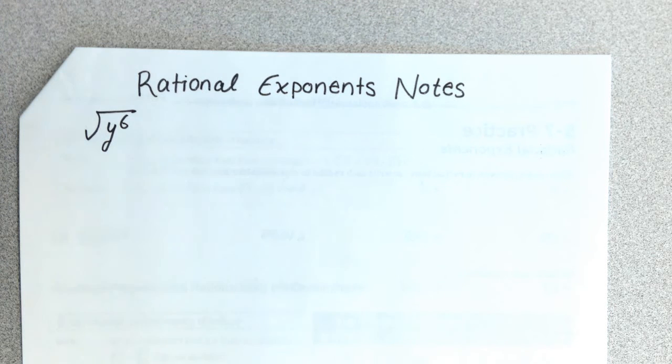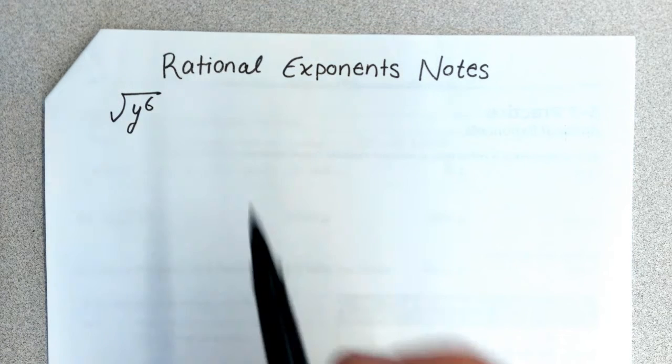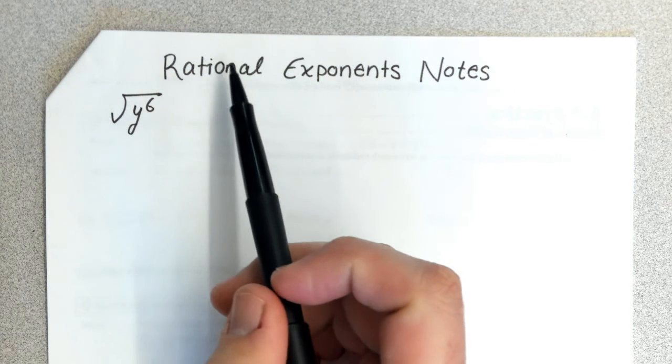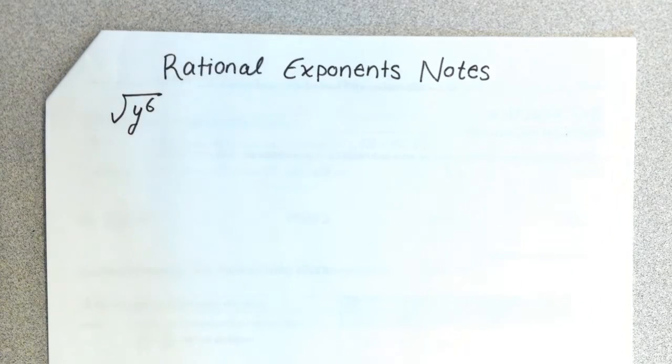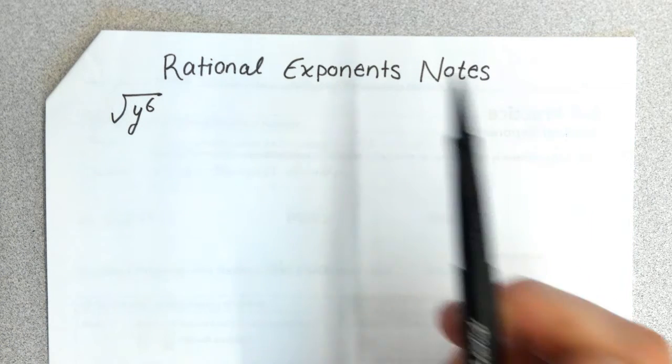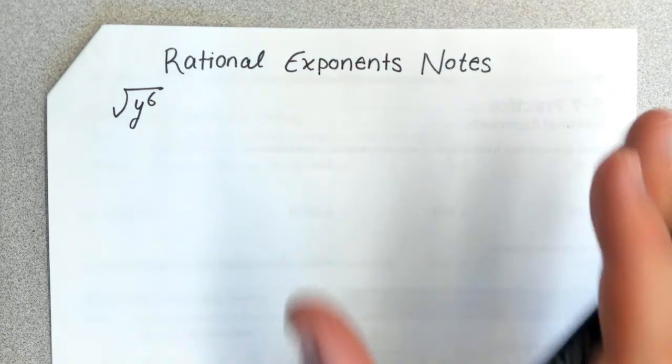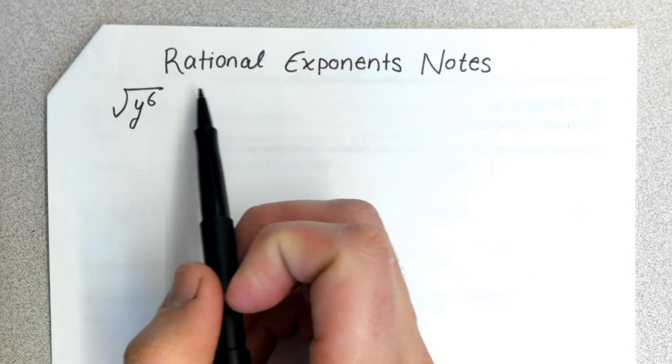In this video, I want to explore an idea called rational exponents. When you hear the word rational, you can think fractional—rational typically means something that looks like a fraction. Exponents you should already know. To lead into rational exponents, I want to look at this example.